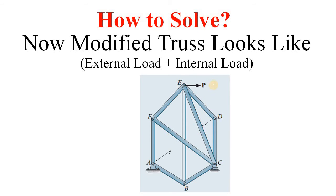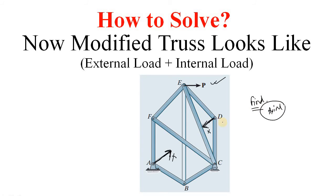The external load remains the same. But as we have removed member AD, we must add some internal load, because in the real original truss there is a member AD — so there must be some internal force. We represent that internal force as X. We don't know what X is. Now the truss is ready and it is time to solve the truss — that is, to find the axial force in each member.